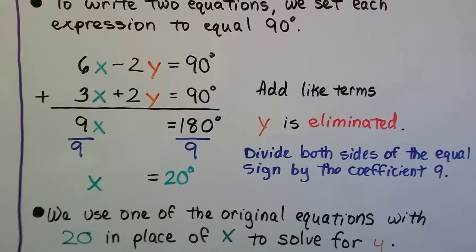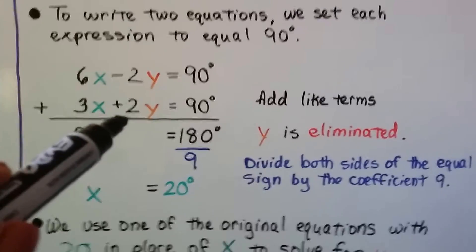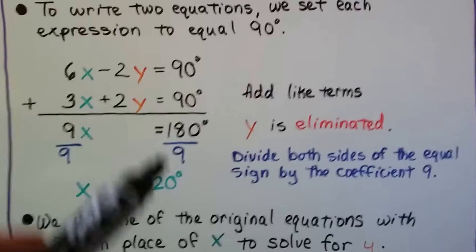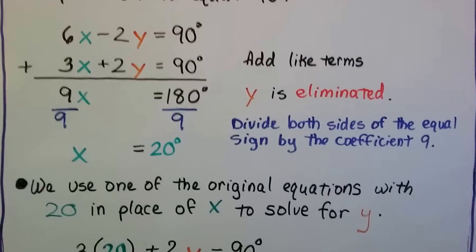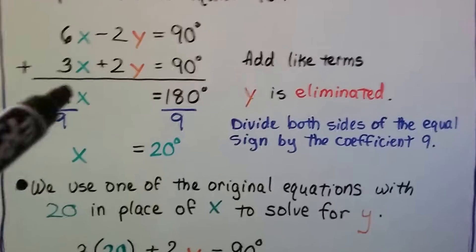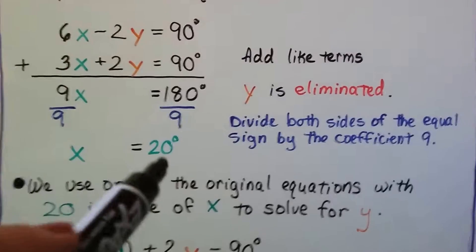We add the like terms. We get 9x, and this negative 2y plus 2y makes a zero pair, doesn't it? So, the y is eliminated, and 90 plus 90 is 180. Now, we divide both sides of the equal sign by that coefficient 9. That gives us, same numerator and denominator, 1x equals 20 degrees.